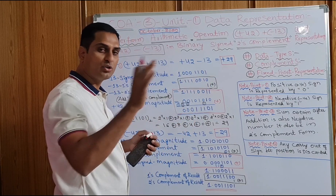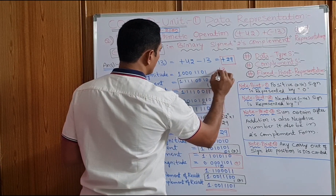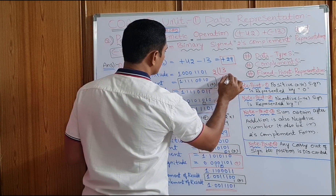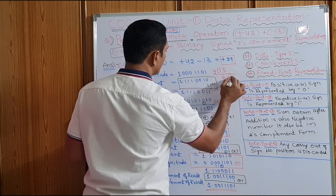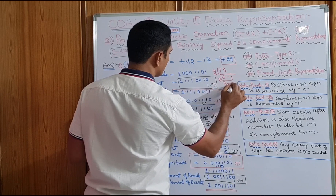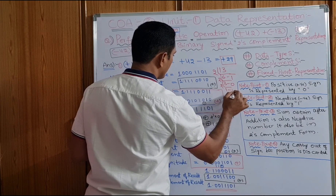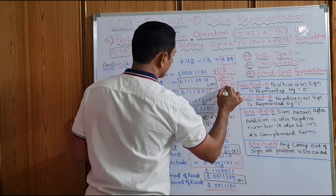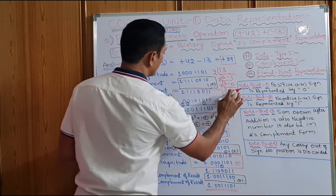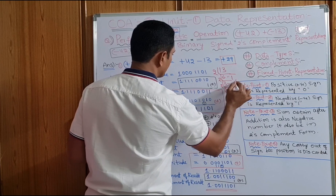Minus 13 is a decimal number. To convert to binary, we need to divide by 2 repeatedly. 13 divided by 2: 6 remainder 1, 6 divided by 2: 3 remainder 0, 3 divided by 2: 1 remainder 1, 1 divided by 2: 0 remainder 1. So we take the remainders from bottom to top.